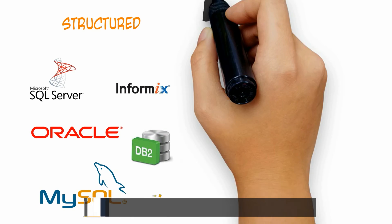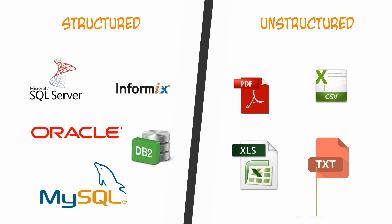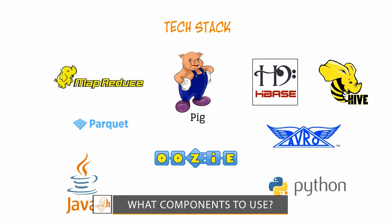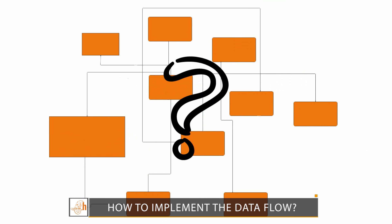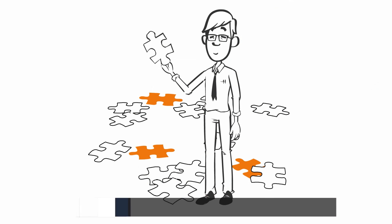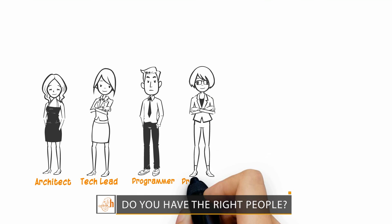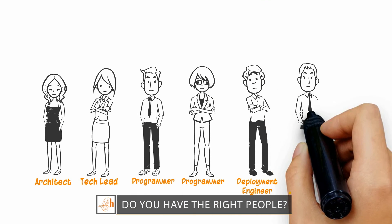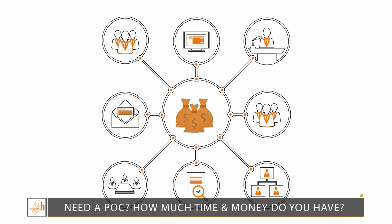What data should you bring in? How can you get the data in? What ecosystem components should you use? How can you implement the data flow? How can you implement the business logic in a distributed processing environment? Are you armed with the skilled resources that are required? Do you need a proof of concept? How much time and money can you spend on the project?